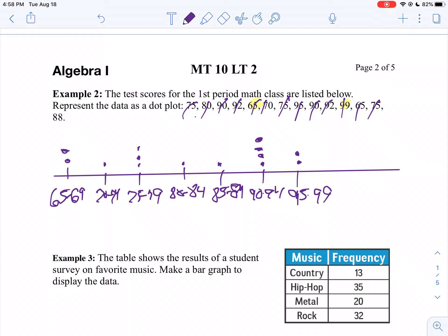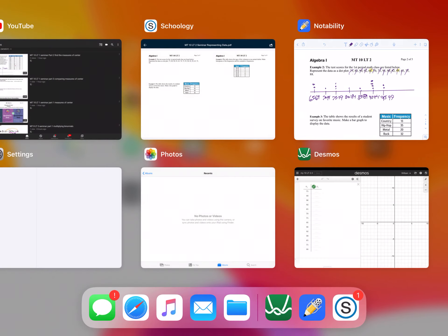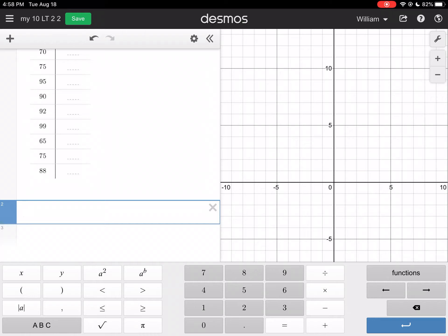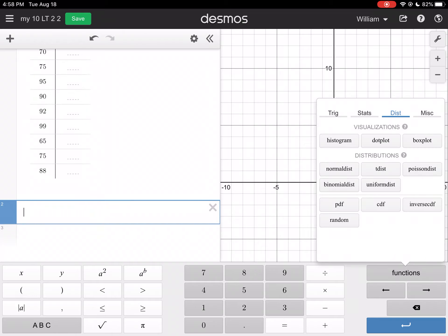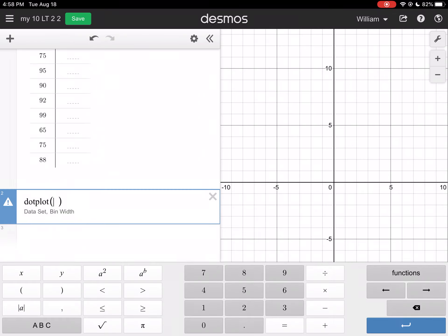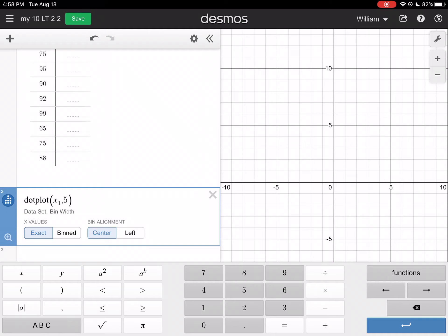You can also do this on the calculator. So I already put my data in. So if you want to pause the video and type your data in Desmos, this time, I'm still going to type in functions. I'm still going to click on dot plot. I'm still going to use X1 because that's my column that has my row. Then I'll go comma.